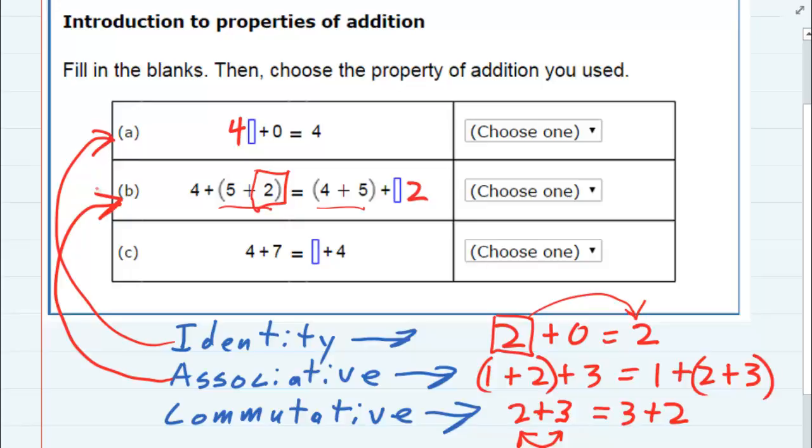And then the last example, we have four plus seven equals something plus four. Well, we know from the commutative property that we can change the order of addition. So four plus seven equals seven plus four.